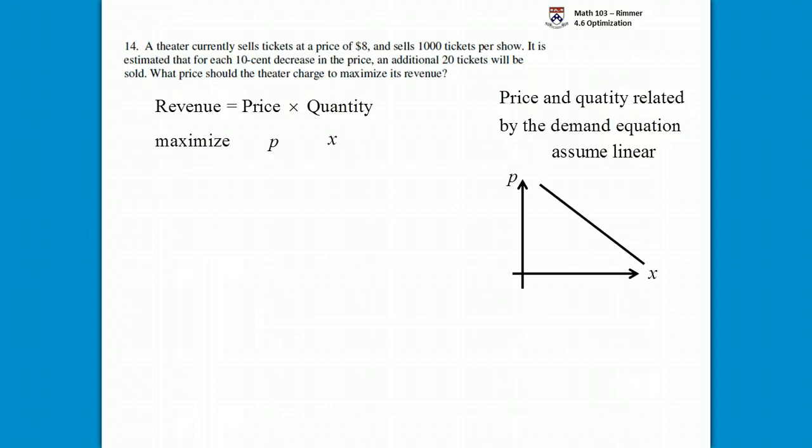We have this set up here where it has to be sloping down because as price goes up, the quantity demanded goes down. If the price goes up on something, you're not going to want as much and you're not going to sell as much. In the first sentence it says that when the price is $8, they're going to sell a thousand tickets. So that's a point that's on this line, with 8 being the price, that's a y value, and thousand being the quantity of tickets, that's the x value.